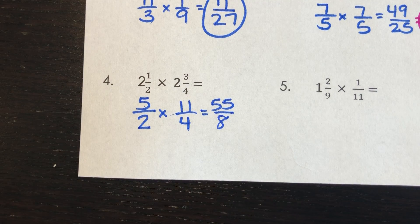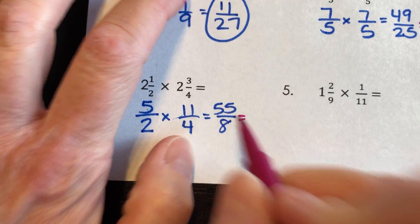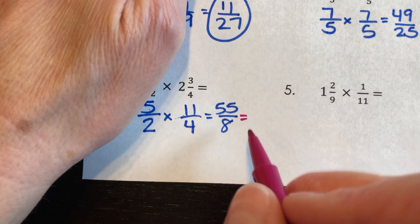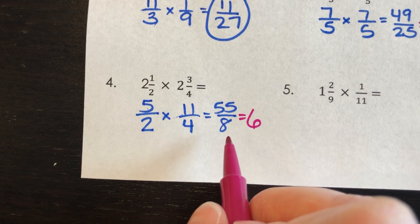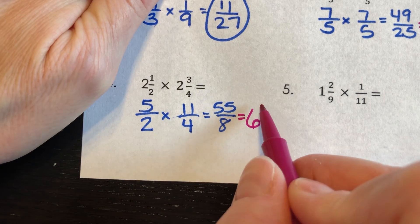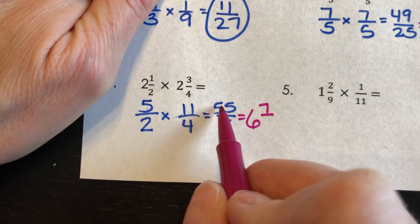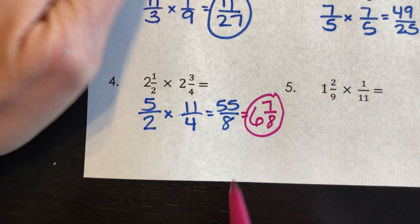That's improper. So I don't want to keep it as improper. So I'm going to ask myself, 8 times what gets me closest to 55? Well, I know 8 times 7 is 56. That's so close. So it must be 8 times 6 then. And 6 times 8 is 48. And we have 7 left. So 48 plus 7 is 55. And our denominator doesn't change. So 6 7/8 is what you should have.